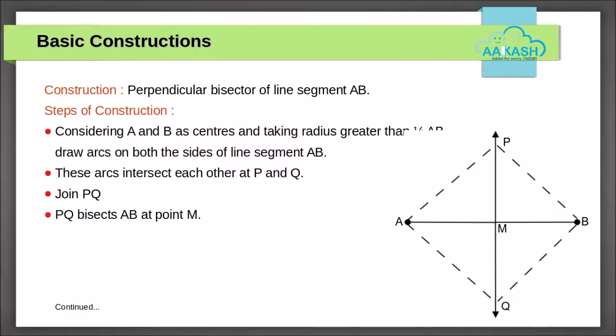Now in the second construction, we will see how to draw a perpendicular bisector of a line segment AB. Using A and B as centers and taking more than half of AB as radius, draw arcs on both sides of AB. These arcs will intersect each other at points P and Q. Join PQ. PQ intersects AB at point M.